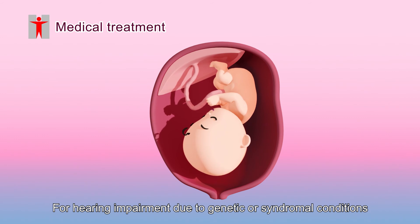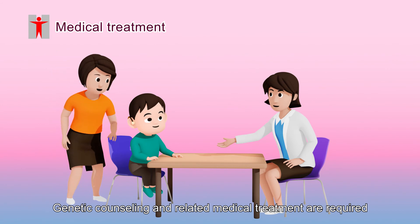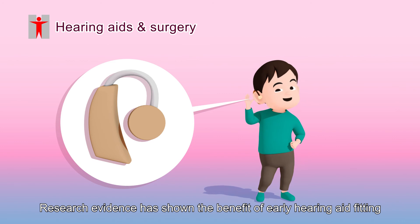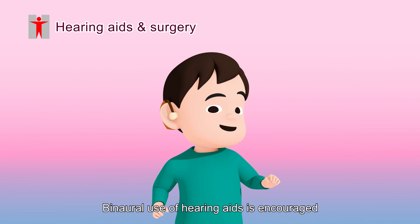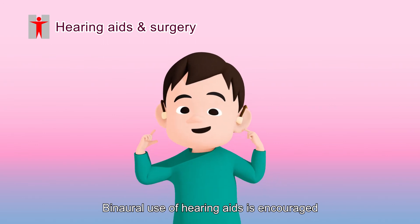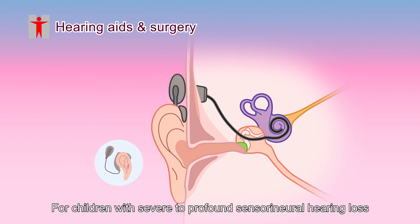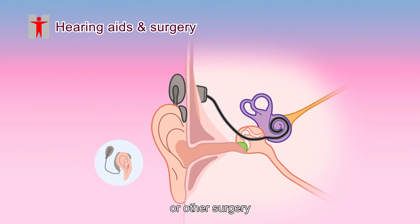For hearing impairment due to genetic or syndromal conditions, genetic counseling and related medical treatment are required. Research evidence has shown the benefit of early hearing aid fitting on the language development of these children. Binaural use of hearing aids is encouraged for more effective perception of sound signals and sound localization. For children with severe to profound sensorineural hearing loss who show limited or no benefit from hearing aids, physicians may recommend cochlear implantation or other surgery.